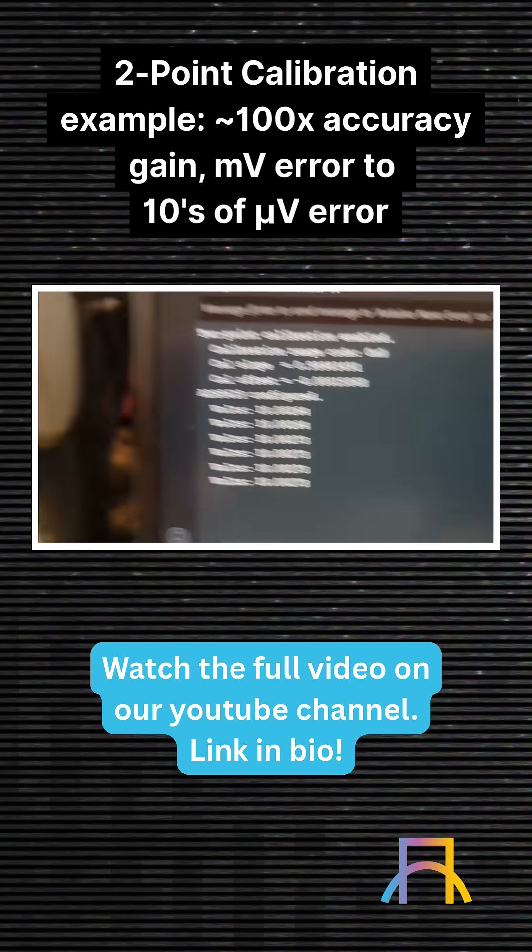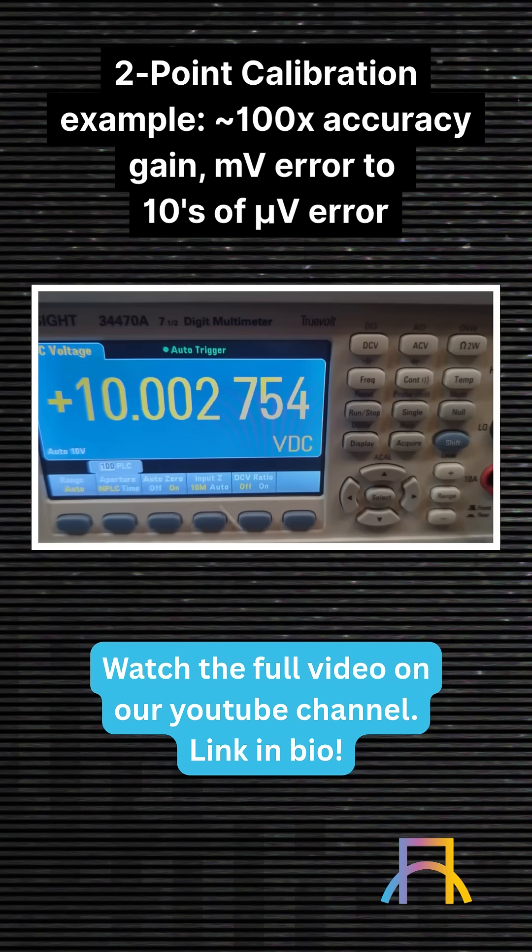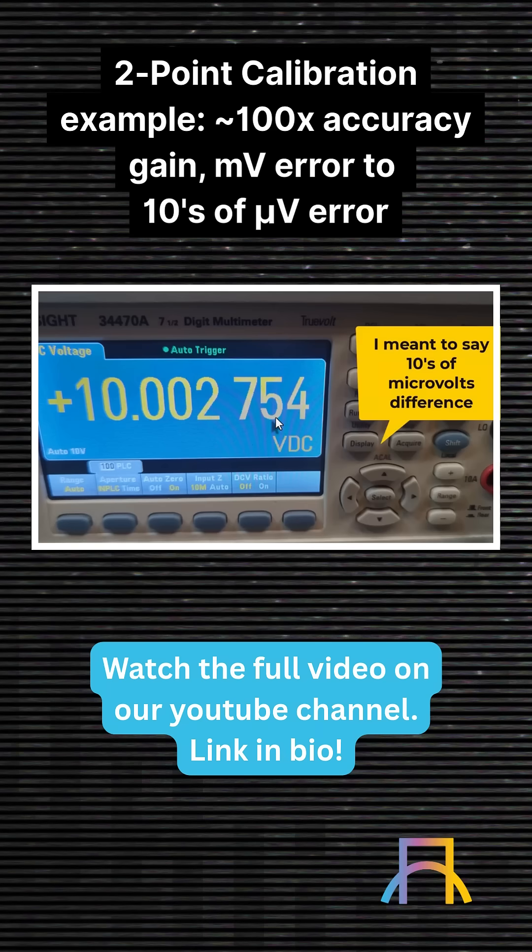Earlier, the ADC was measuring 10.0045 volts. We can see the DMM is still measuring the same value. So now we went from being almost two millivolts different to just a few hundred microvolts different.